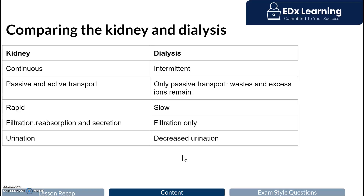Recall that the kidney is very complex — it engages in active and passive transport. It filters approximately 200 liters of body fluid a day; that's your entire circulatory system of five liters approximately 40 times. The kidneys have a lot of reserve, and you only need one kidney to survive.